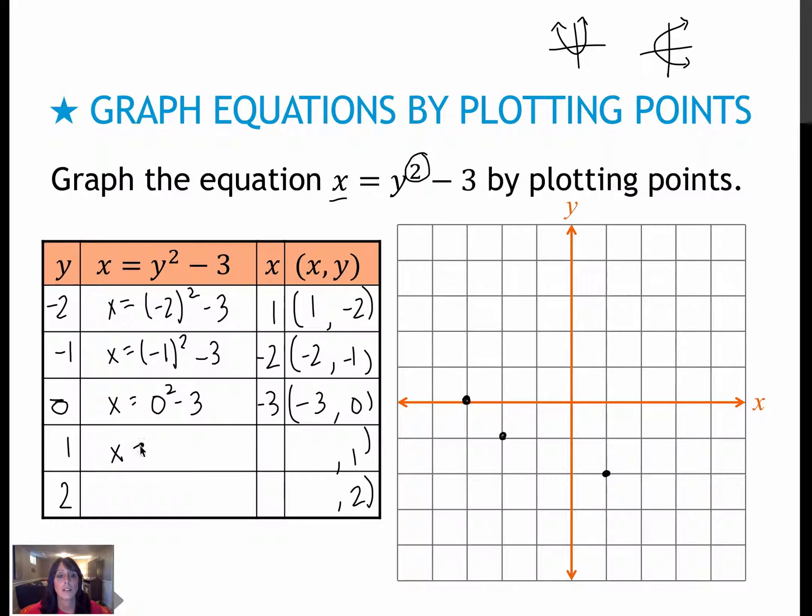Plugging in 1, I get 1 squared minus 3, which is 1 minus 3, or negative 2. So that's negative 2 comma 1. And last one, I get 2 squared minus 3, which is 4 minus 3, or 1. So that's 1 comma 2.